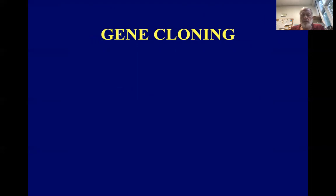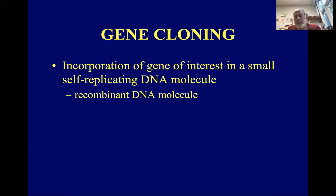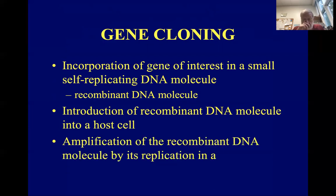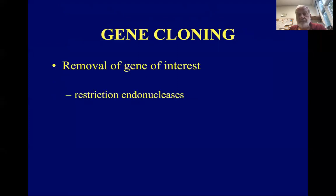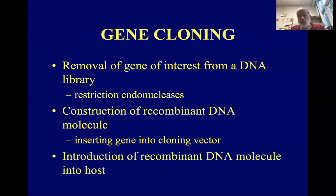Now let's discuss how we clone a gene. We take a gene of interest and put it into a small, self-replicating molecule — that becomes a recombinant DNA molecule. Then we put this molecule into a host cell, and as the host cell grows and reproduces, it makes more copies of the gene. Sometimes the gene will also be expressed, as with human insulin. It's a three-step process: removing the gene of interest requires restriction endonucleases; then we construct a recombinant DNA molecule by inserting the gene into a cloning vector; then we introduce that vector into the host cell, normally a bacterial cell.